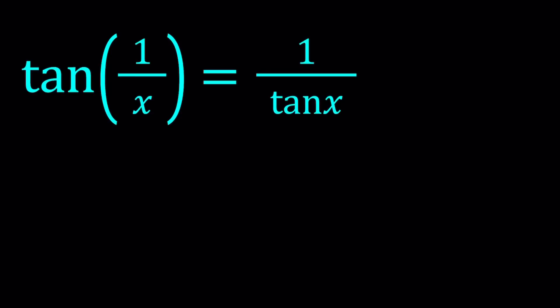We have tangent 1 over x equals 1 over tangent x. So let's go ahead and do the following. I can write the 1 over tangent x as cotangent x, which is the reciprocal of tangent x, which is also a co-function for tangent. And then cotangent and tangent are co-functions.